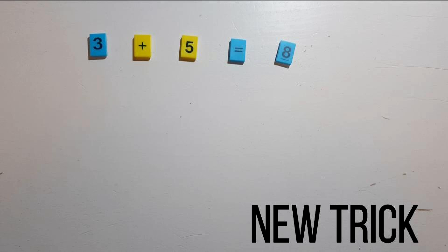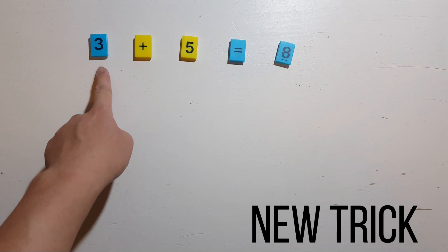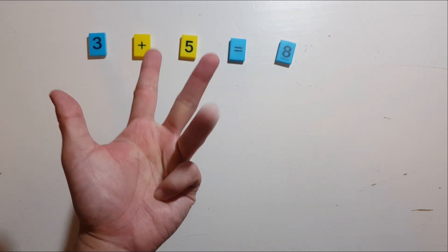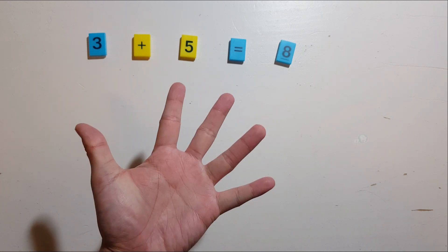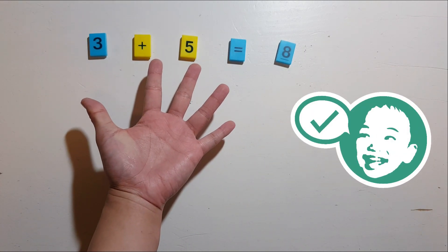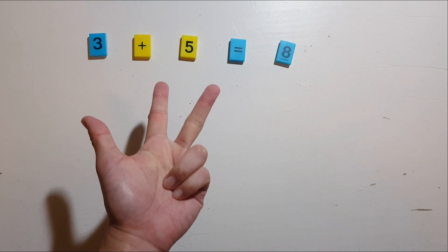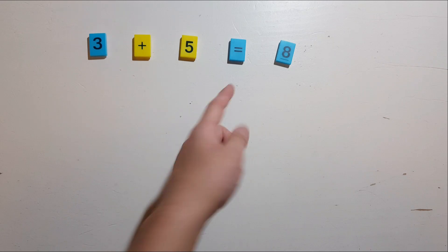Now, the new trick is to count only one number, but not starting with number 1. Instead, we start with another number. In the previous question, 3 plus 5, we're going to count only the 5, but start with the first number 3. So: 3, then the next number is 4, then 5, then 6, 7, 8. We stop here because 5 fingers are already up, and we needed to count 5. Therefore, the answer is where we stop, which is 8.